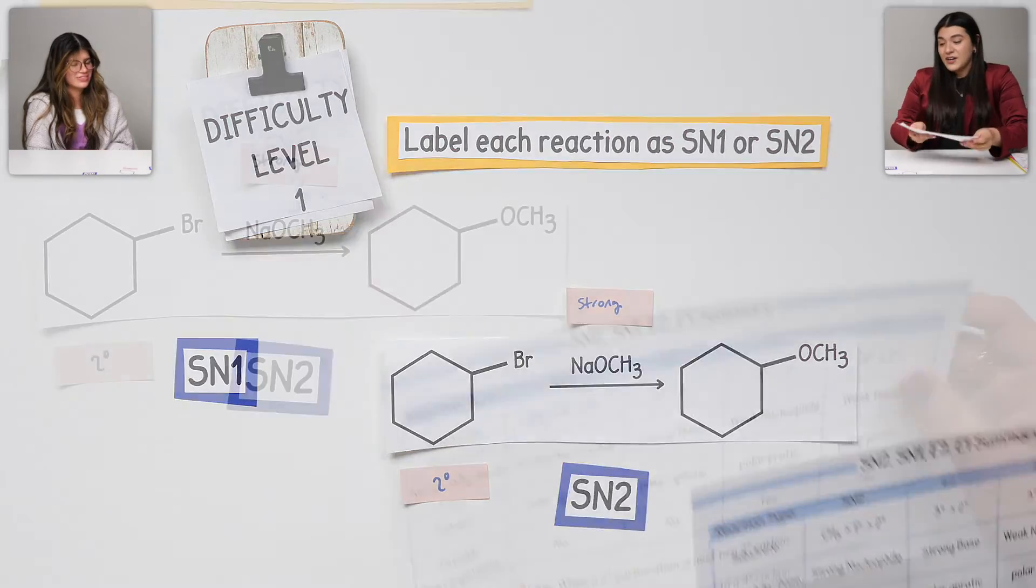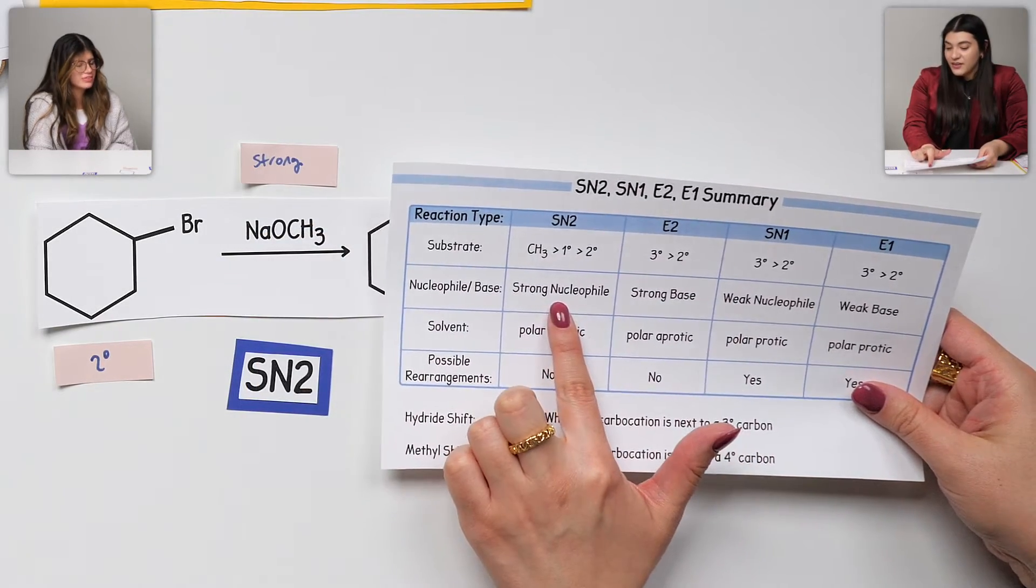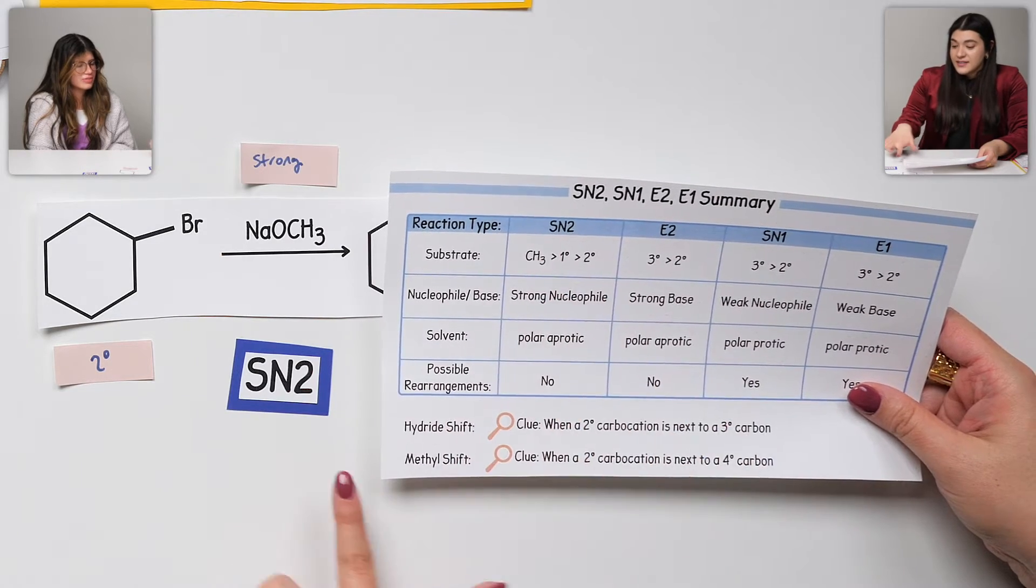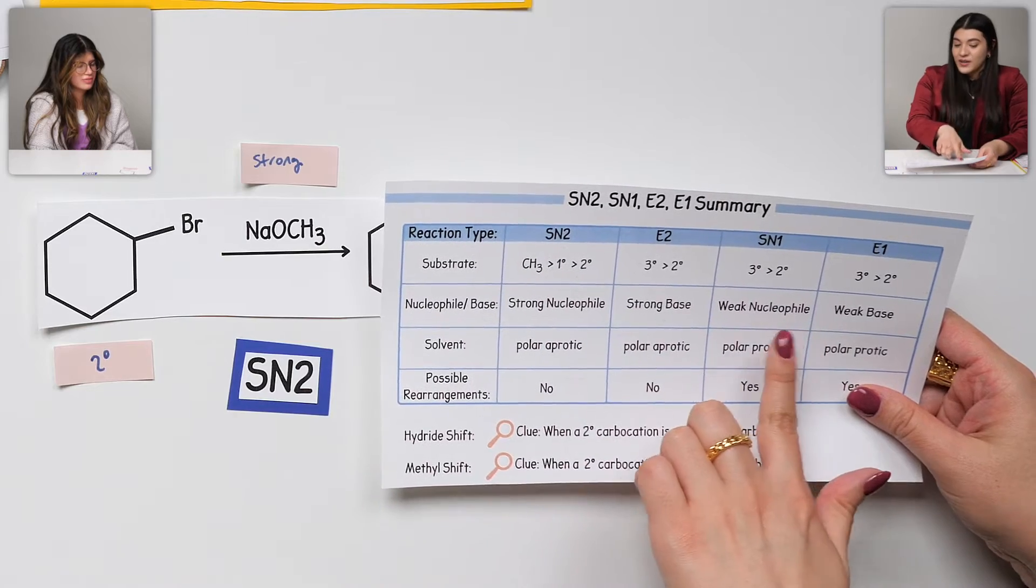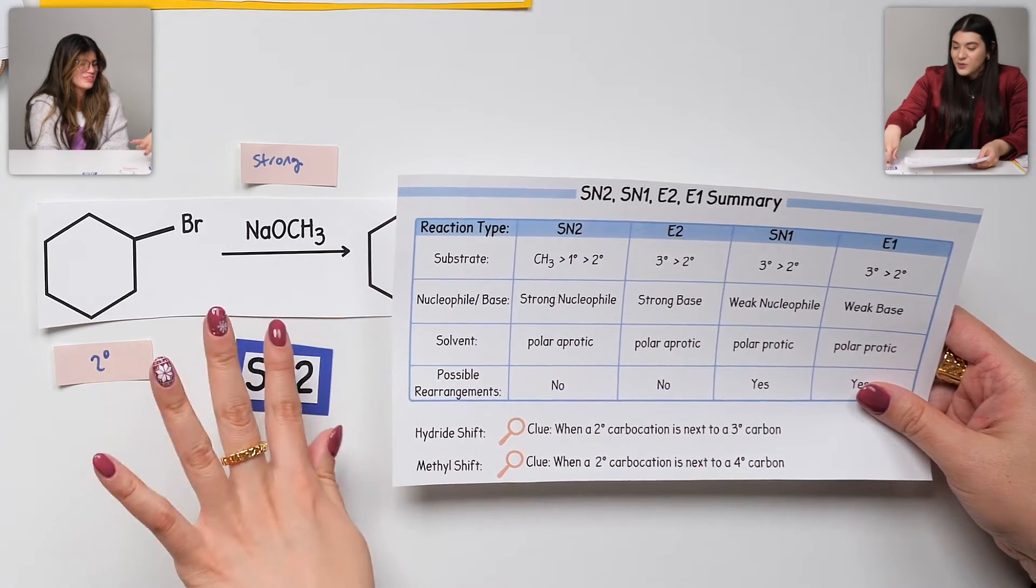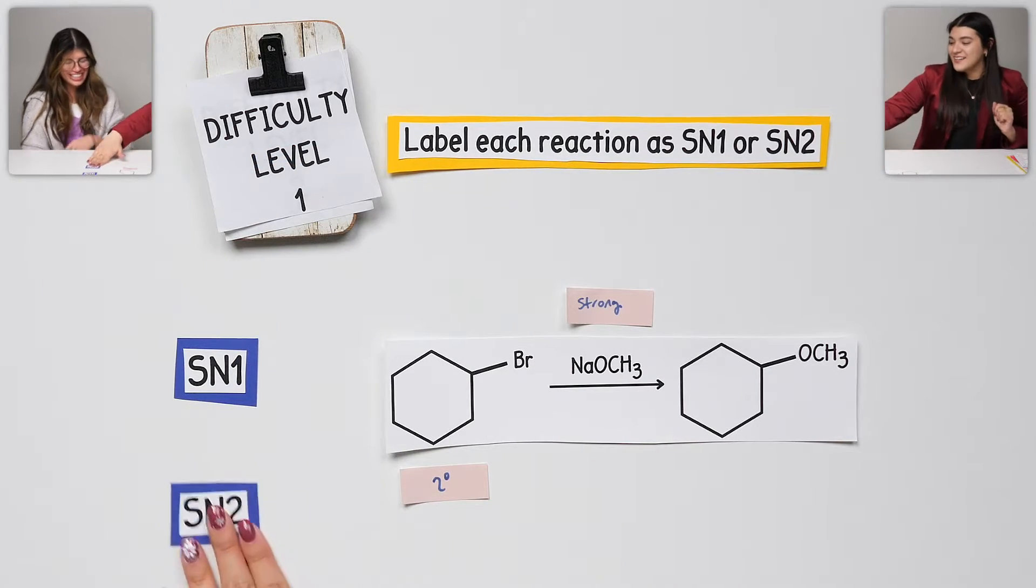Those are two things that are going to tell me what type of reaction it is. I know that when I have something that has a strong nucleophile and it can work with a secondary alkyl halide, that is going to be SN2. Versus SN1, we would have spotted it from the nucleophile. This isn't weak, it's strong. So, yep, SN2. Perfect.